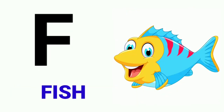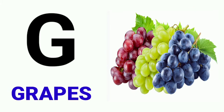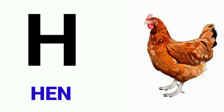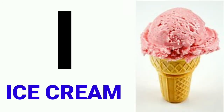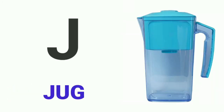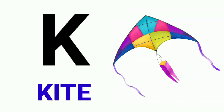F for fish, G for grapes, H for hen, I for ice cream, J for jug, K for kite.